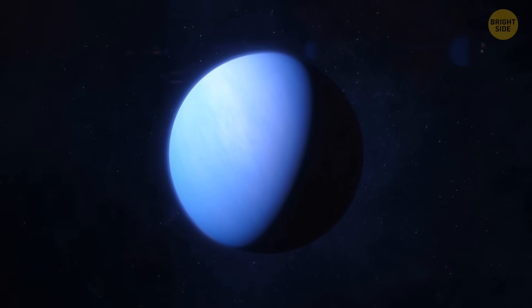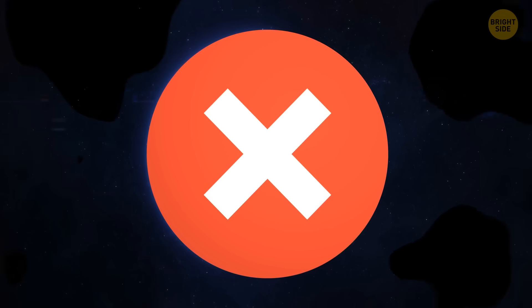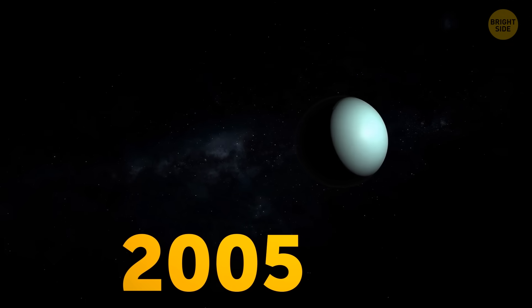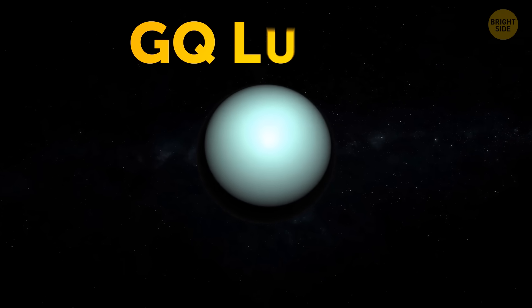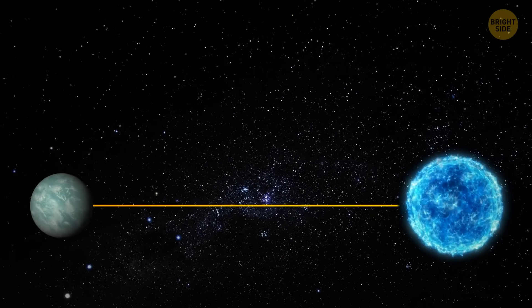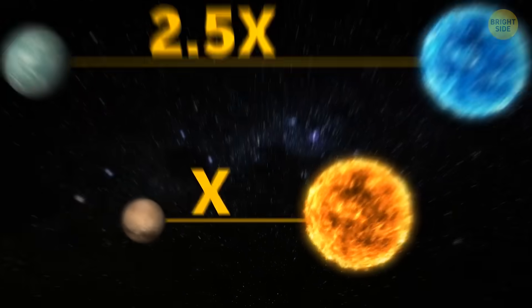But AB Aurigae B isn't the largest exoplanet ever discovered. In 2005, astronomers spotted a mysterious space body. Later, they called it GQ Lupi B. The thing was orbiting a young star at a distance two and a half times greater than that between the Sun and Pluto.